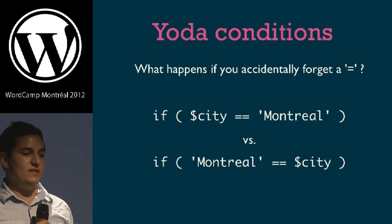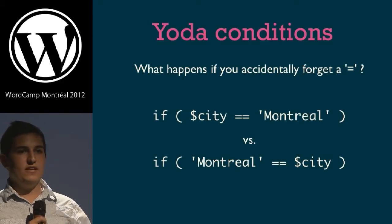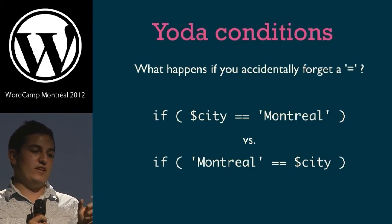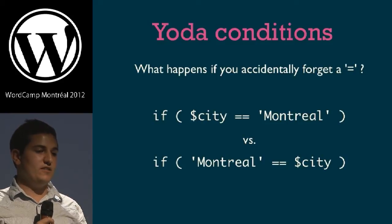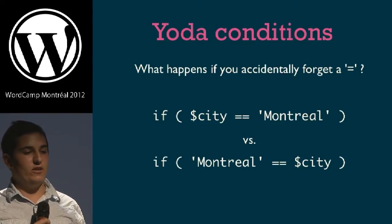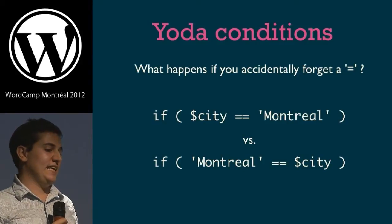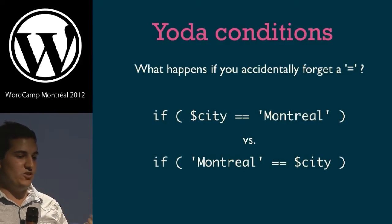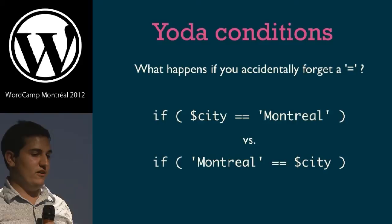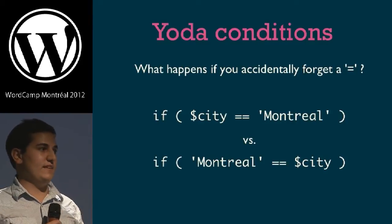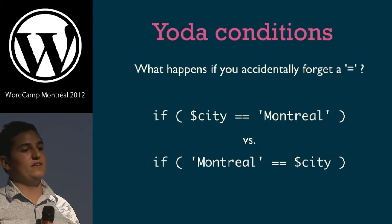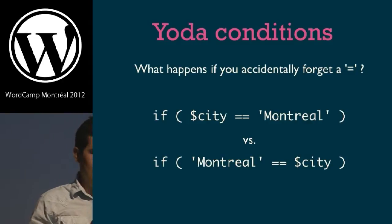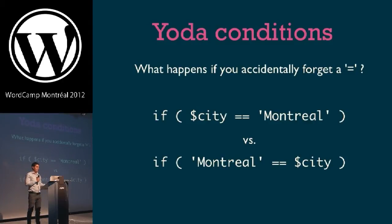Yoda conditions: if you're doing an if statement, always put whatever you're checking against as the first argument, and the thing you want to check as the second argument. If you put only one equal sign, you accidentally assign the city variable to 'Montreal'. Instead, if you check 'Montreal == $city', you don't incur that possibility. The standard for WordPress development is to always use these so-called Yoda conditions because you're speaking like Yoda would.